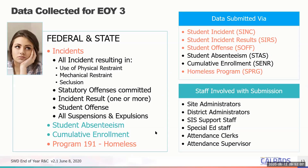Data collected for end of year three is in totality for all students reported. The focus of end of year three is incidents — those may be statutory offenses, the use of restraints and seclusions, and the results of those incidents, which typically include suspensions and expulsions, but are not limited to that. Also included are student absenteeism, cumulative enrollment, and the homeless record. In the top right corner, you can see all the file types related to end of year three, and these are at a minimum.